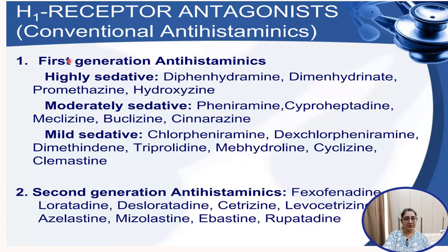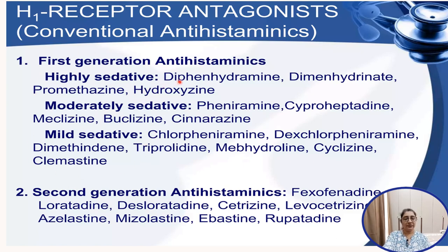H1 receptor antagonists are of two types: first generation antihistaminics and second generation antihistaminics. First generation antihistaminics usually penetrate the blood-brain barrier and cause sedation, while second generation antihistaminics do not penetrate the blood-brain barrier, resulting in no or less sedative effect. Within first generation, there are three categories: mild sedative, moderately sedative, and highly sedative antihistaminic drugs.